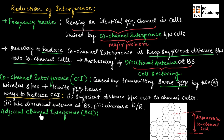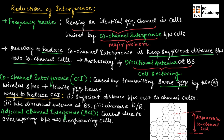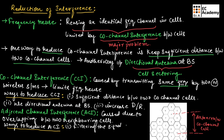Another major issue for frequency reuse is adjacent channel interference, which is caused due to overlapping between two neighboring channel cells. There are different ways to reduce ACI. The first way is by filtering the signal to be received, and the second way is by proper separation of adjacent cells.